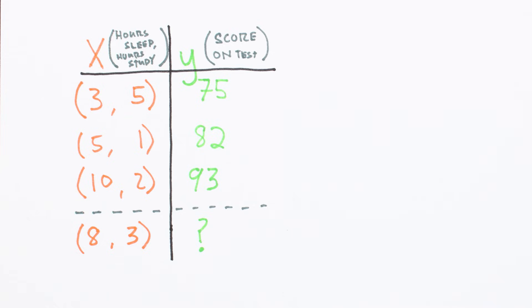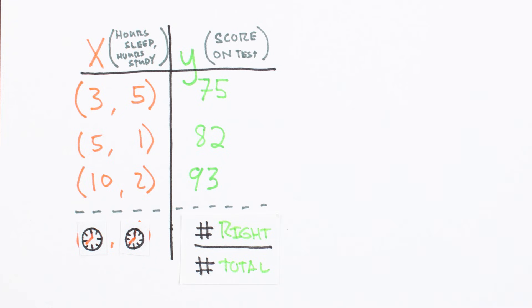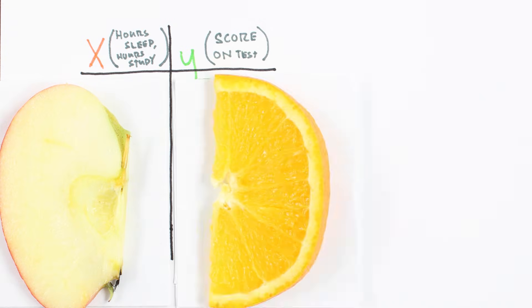Before we throw our data into the model, we need to account for the differences in the units of our data. Both of our inputs are in hours, but our output is a test score scaled between 0 and 100. Neural networks are smart, but not smart enough to guess the units of our data. It's kind of like asking our model to compare apples to oranges, where most learning models really only want to compare apples to apples.